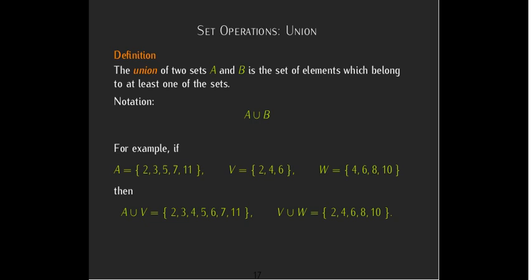So again, we'll go back to our same A, V, and W. So for A union V, we're going to start with all of A. And then what do we have in V that's not in A? Well, we don't have a 4 and we don't have a 6.